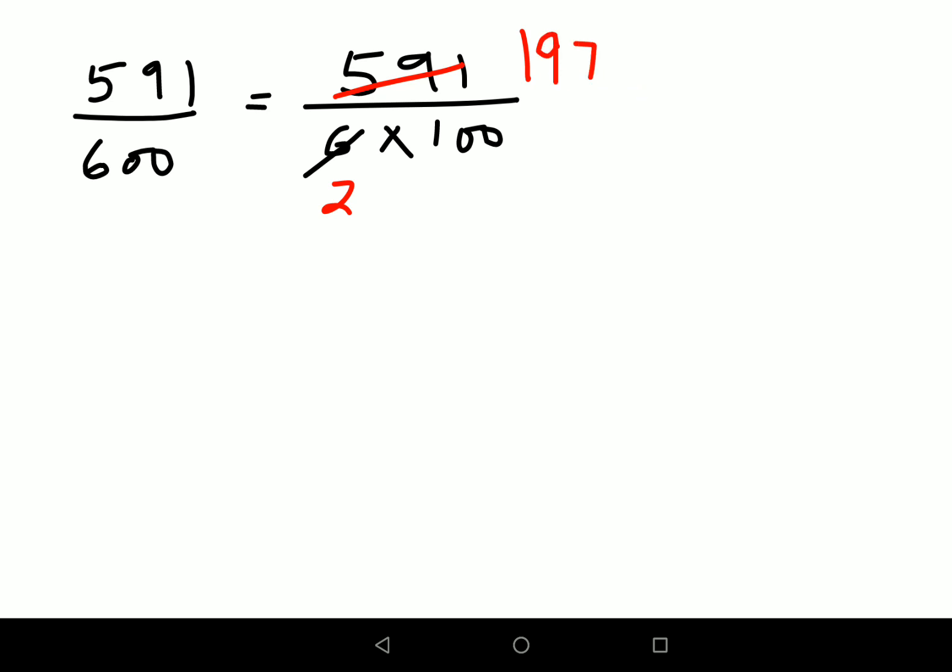Now I want you to take a pause and try to do this and see what's your answer. I'll do this on another page. We have 591 upon 600. This can be written as 591 as it is, we write 6 into 100. When you add 5 plus 9 plus 1, that gets you 15, so that is divisible by 3. We will divide both sides by 3.